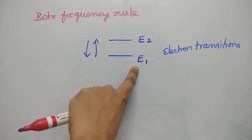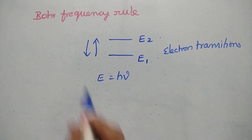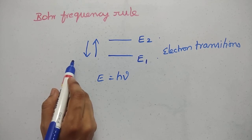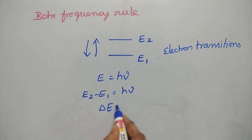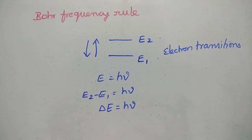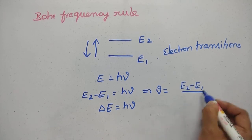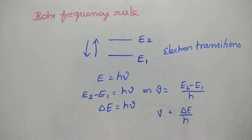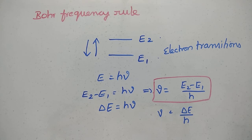E1 is state 1 energy, E2 is state 2 energy. We have the relation E equal to h nu. Now the electron absorbs and emits radiation. We need to see the difference between the energy states: E2 minus E1 is equal to h nu, so the frequency nu equals E2 minus E1 by h, or delta E by h. When the electron is excited, absorption takes place; when it returns, emission takes place.